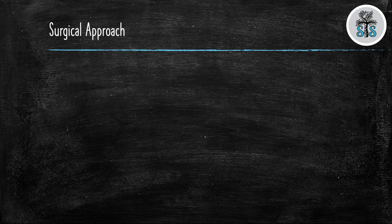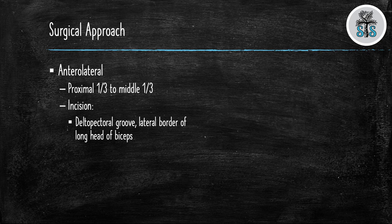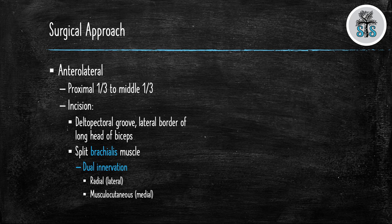We will talk about two surgical approaches used for open reduction internal fixation. The anterior lateral and posterior approach. The anterior lateral approach will be most commonly used in proximal third to mid third humeral shaft fractures. The incision will be from the delto pectoral groove and extended to the lateral border of the long heads of the biceps. You will split the brachialis. Remember that the brachialis has dual innervation.